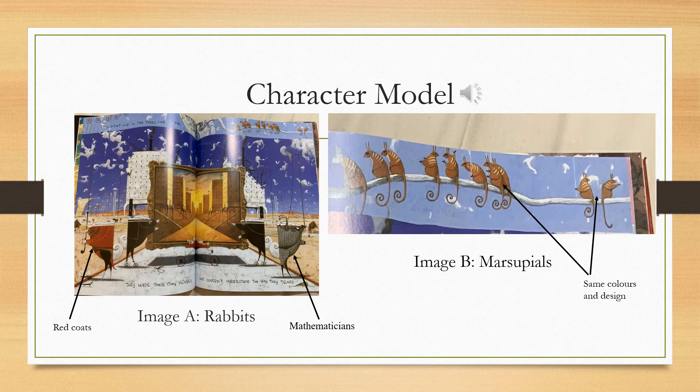In the case of The Rabbits, the authors have shown character modelling in great detail. For example, the rabbits are seen wearing very formal, functional and specific clothing with references to their roles within their society. One rabbit is wearing traditional red military fatigues, synonymous with the British red coat, and another is wearing a suit with a number pattern, synonymous with the dress of mathematicians in the 19th century. In comparison, the marsupials are only represented through their base colour and white back markings, representing the idea that they are not defined within a role system.